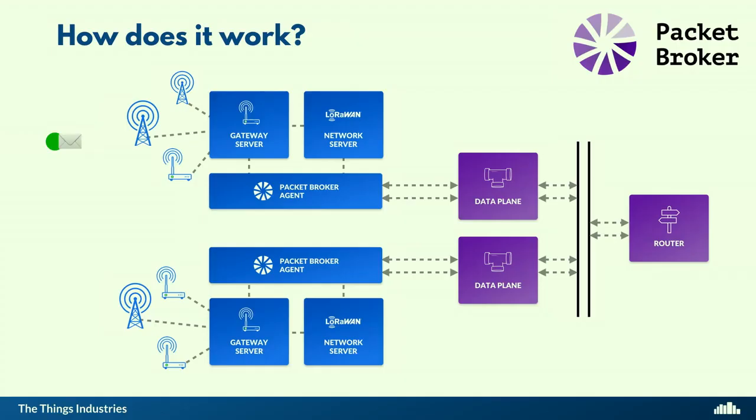So how does it work when a device is seen by a gateway on another network? The traffic goes to that gateway server, which says 'this message is not for my network,' offloads it to the Packet Broker agent, sends it to the data plane, picked up by the router, sent back to another data plane instance, and then sent to the home network. It's very simple.